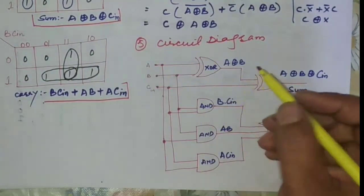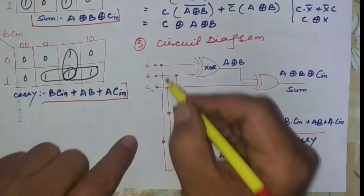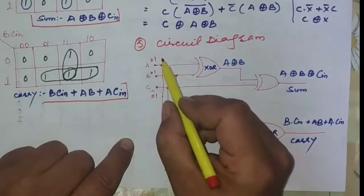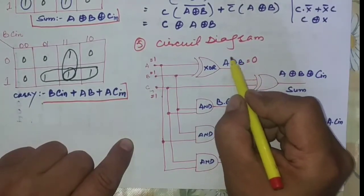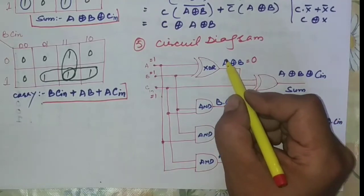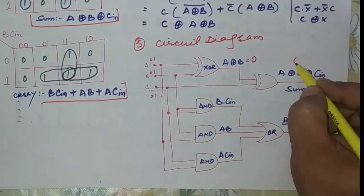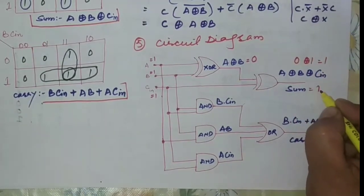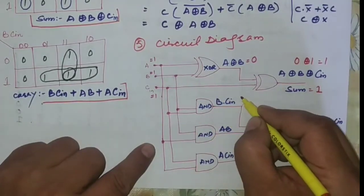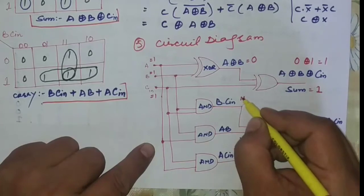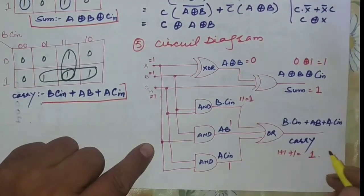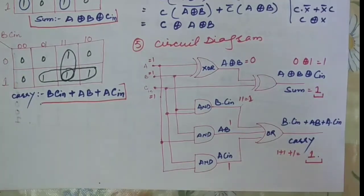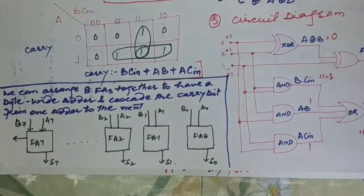We can verify the circuit with A=B=C_in=1. For sum: A⊕B gives 0 (two ones, even count), then 0⊕1 gives 1, so Sum=1. For carry: all AND gates output 1, and the OR gate gives C_out=1. This matches the truth table entry for 1,1,1 where both sum and carry are 1.